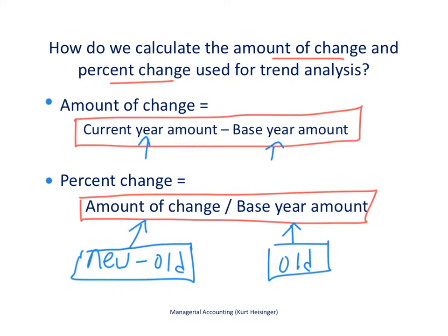If the amount of change is a negative number — for example, if revenue went down — that would be a negative number, and we would show the percent change as a negative percent change.